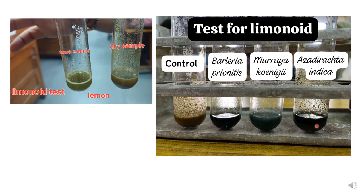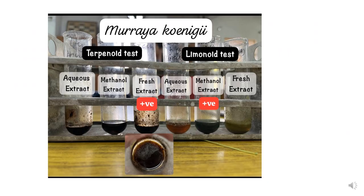After performing this experiment in practical classes, we observed that extract prepared in methanol gives nice results for limonoid, while aqueous extract does not give results for limonoid. In the first picture, both the fresh sample and the dry sample are aqueous extracts of the leaf. While the tubes showing positive test are all extracts dissolved in methanol. So remember: to get a nice positive test for limonoid, dissolve the sample in methanol.